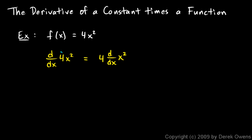So a constant multiplier can be brought out front, and then we can just take the derivative of the function that's left. And so this is going to be 4 times the derivative of x squared, and the derivative of x squared is simply 2x. So we end up with 8x as our answer, and it's that easy.